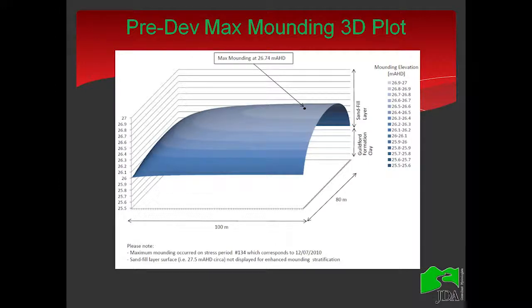Another nice feature of Modflow is that it returns the result of the water level height as a function of X, Y, and Z, so you know exactly where it is in space. We have a maximum mounding of 74 centimeters above the clay and sand interface, and you can see the isopotential lines decreasing — so it's a full 3D model.